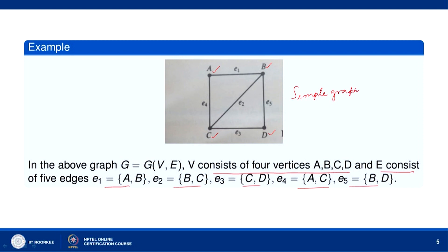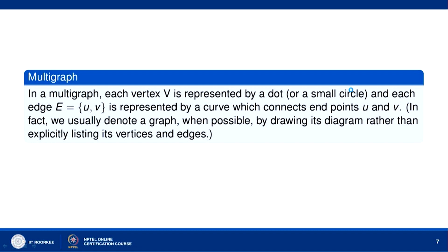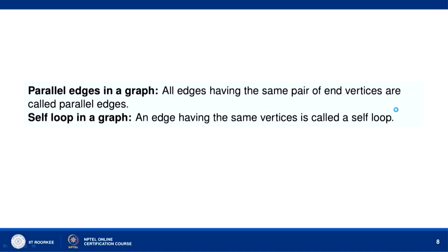Now what are parallel edges and loops? Let us first define a multigraph. In a multigraph, each vertex V is represented by a dot or a small circle and each edge E equal to UV is represented by a curve which connects endpoints U and V. All edges having the same pair of end vertices are called parallel edges, and an edge having the same vertex at both ends is called a self-loop.